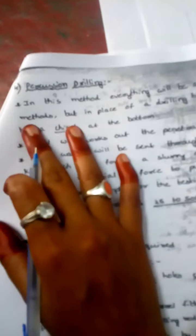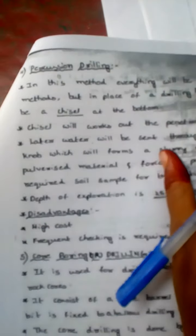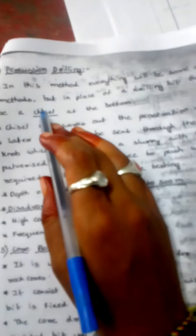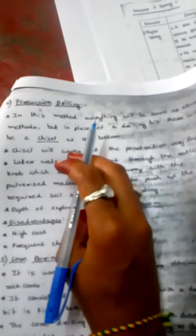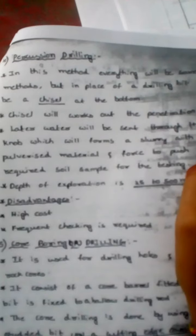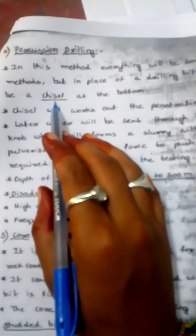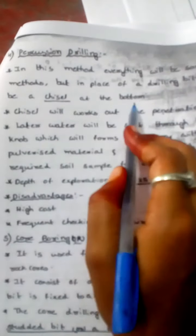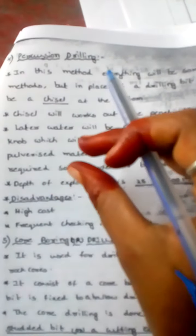Next is precision drilling. This method is the same as the above methods, but in place of the drilling bit, there will be a chisel at the bottom.